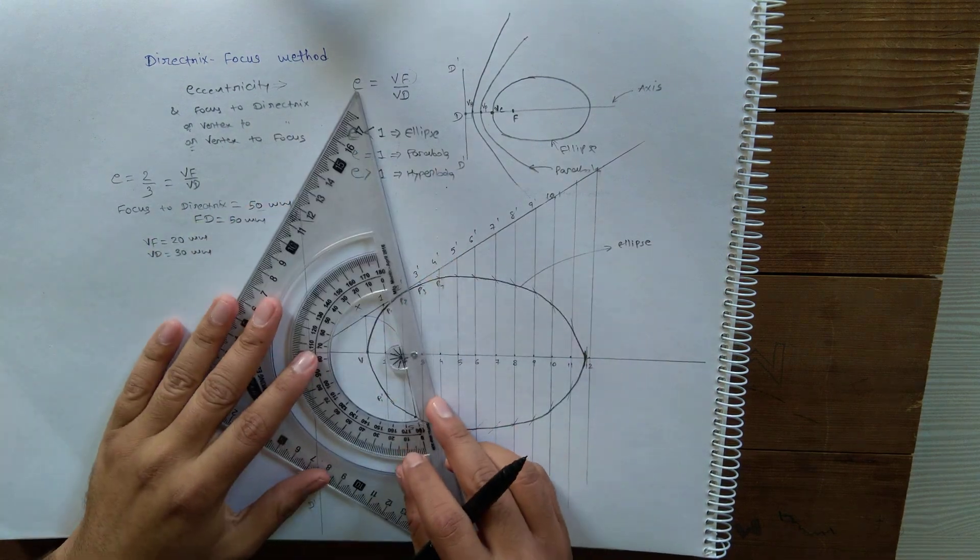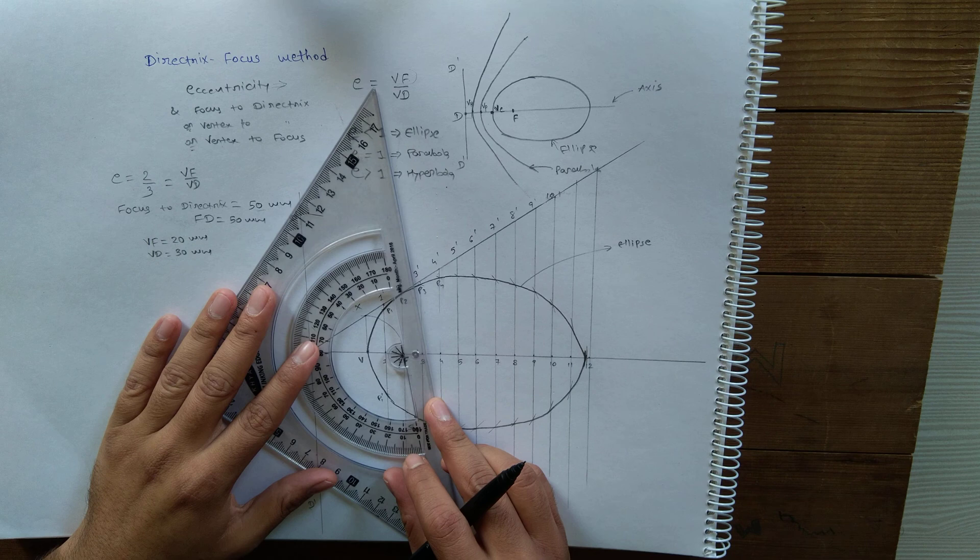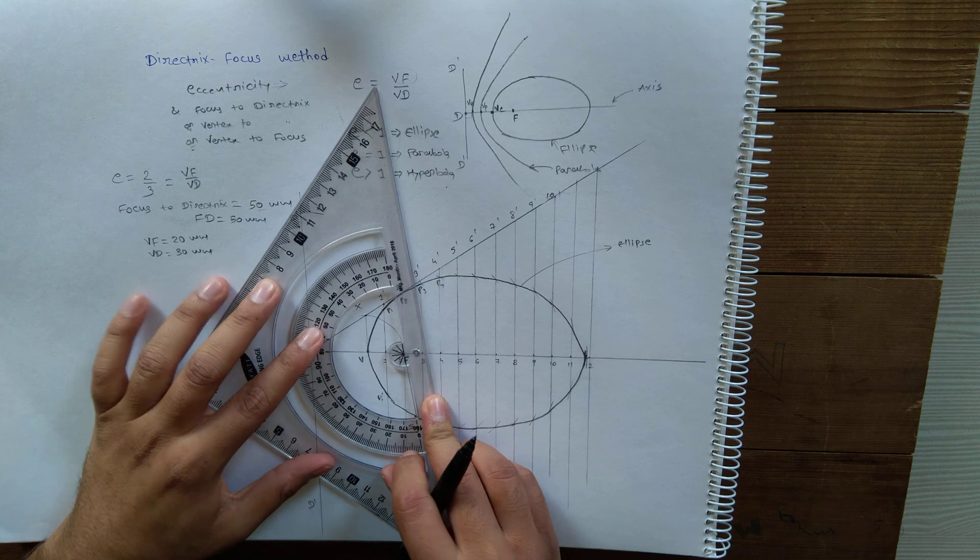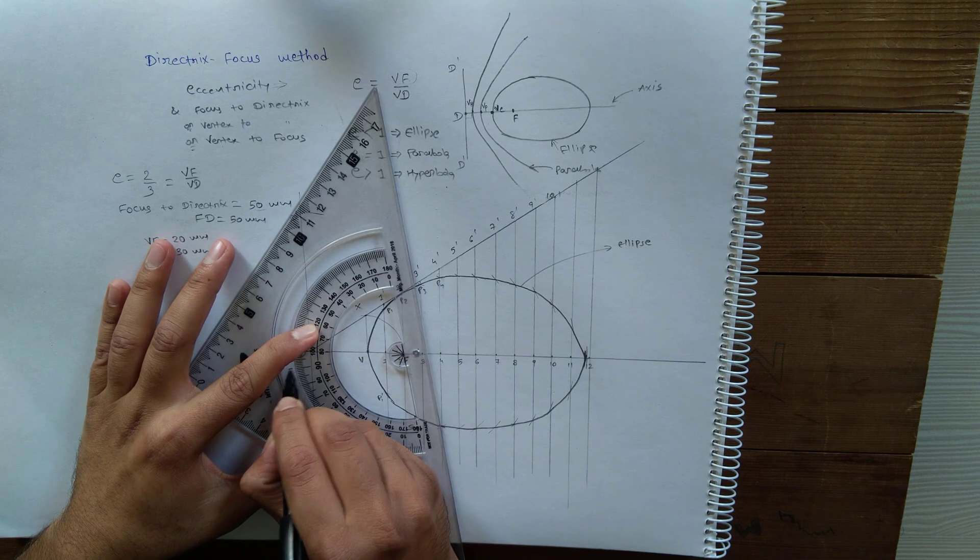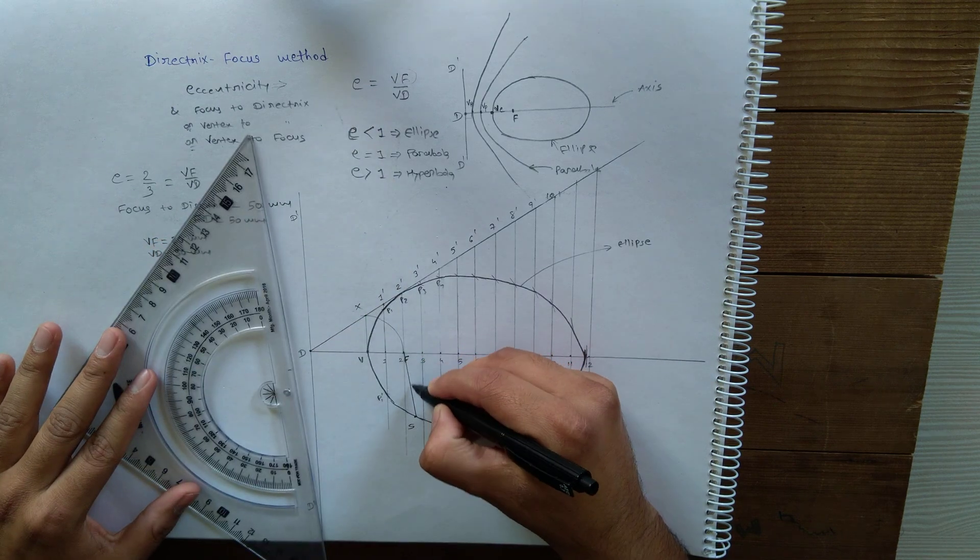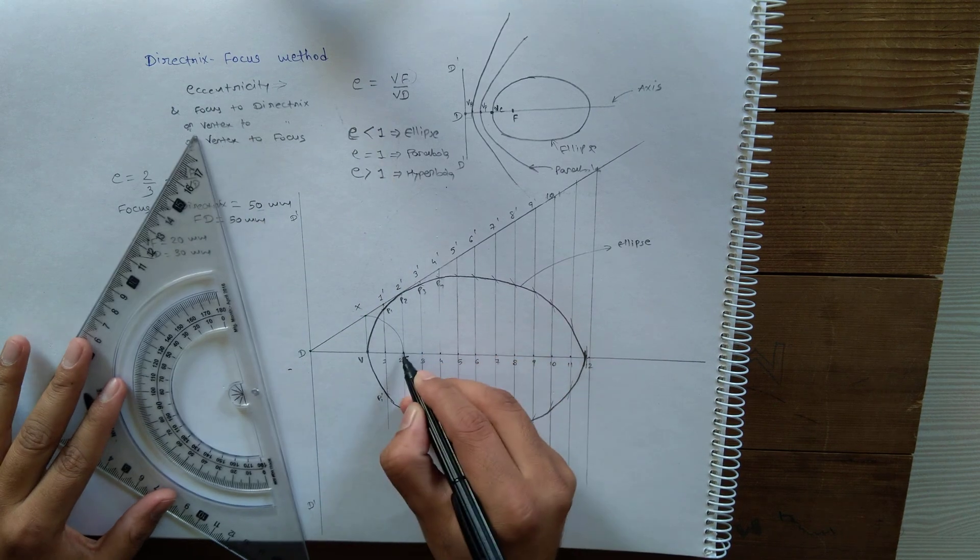Draw one line which is at 90 degrees to this line - a line which is perpendicular to this line.